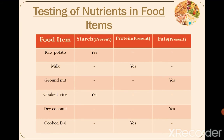You have now tested 3 nutrients: carbohydrates, proteins, and fats. Let's recall. If we test raw potato for starch, you will get a positive result — it means raw potato contains starch, but not protein or fat.